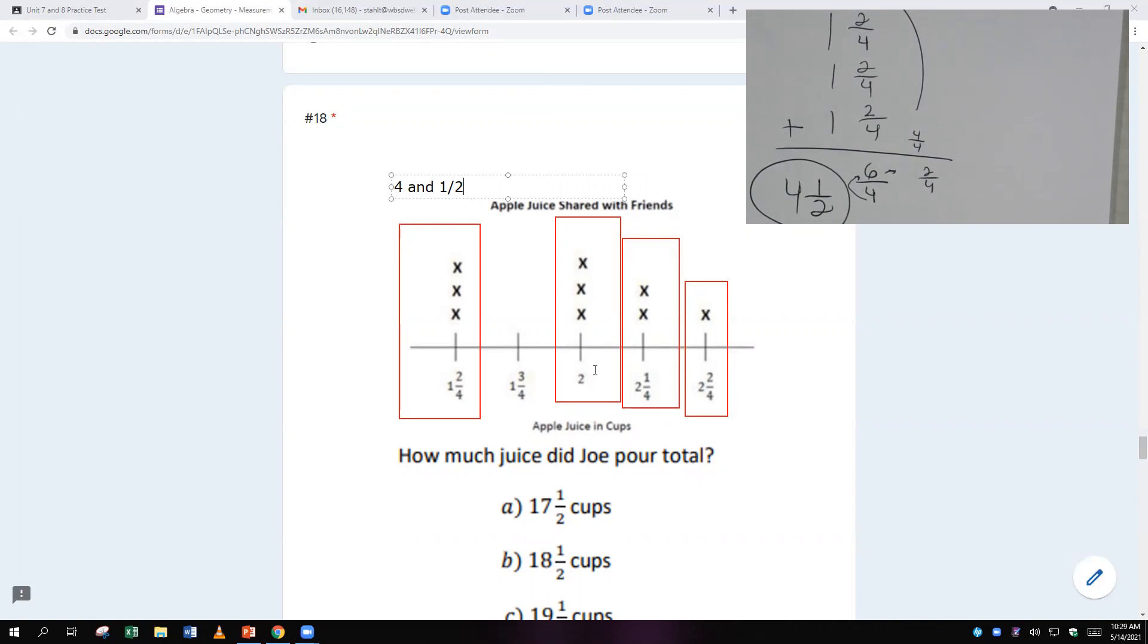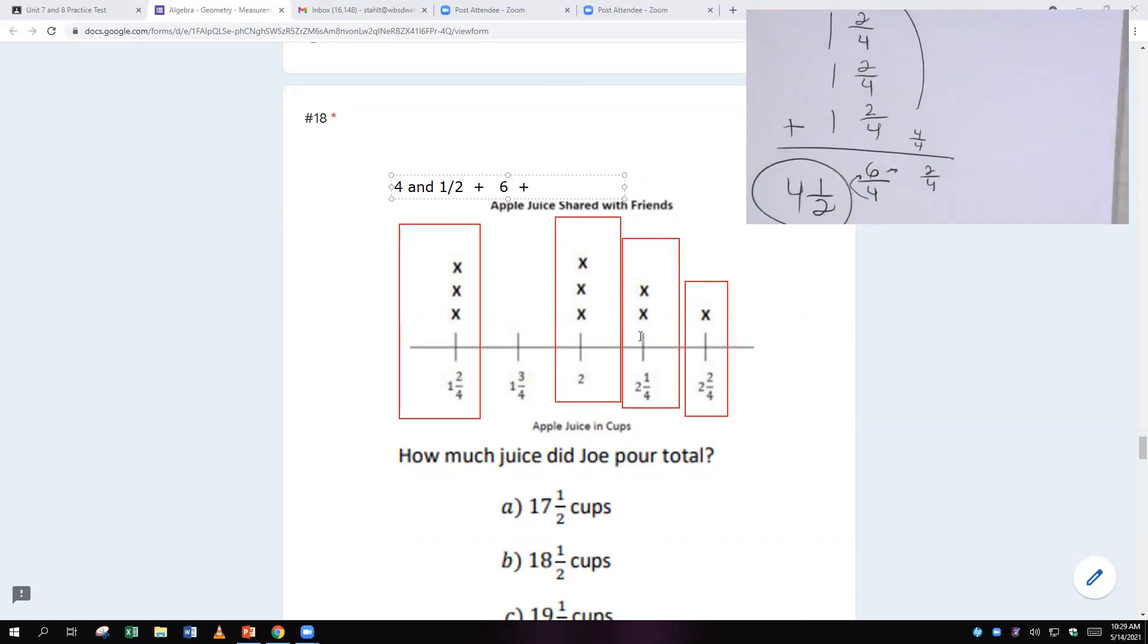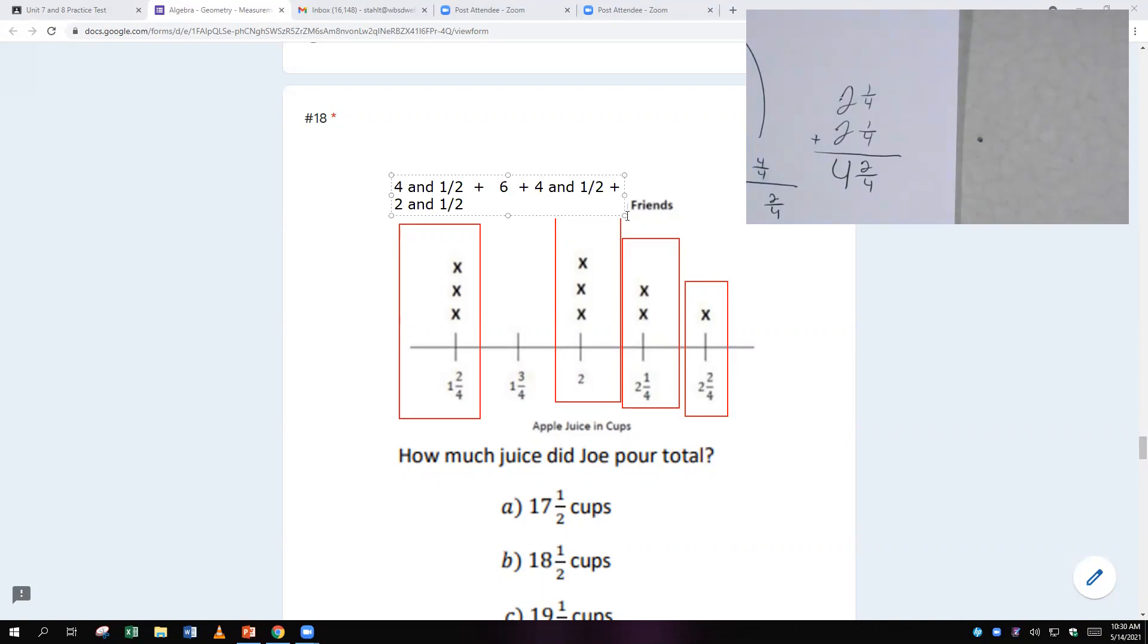And then down here, I'm going to say two plus two plus two is six. So I'm going to go plus six. And then this one is two and one-fourth and two and one-fourth. Well, we have two and a fourth, two and a fourth, two-fourths, which is also a half, and we have four. So this is four and a half again. And then we have one more, which is two and a half, right? Because it's two and two-fourths, and there's one apple. Now I just have to add all those together, and I'm good.